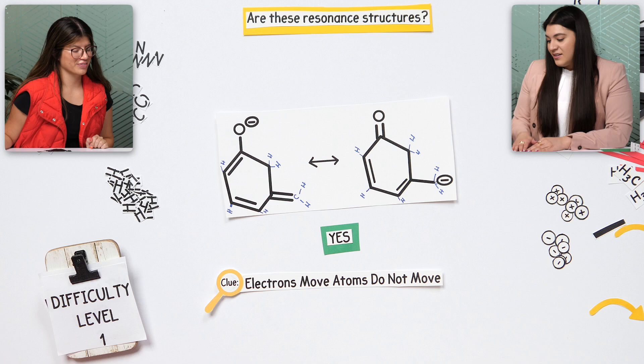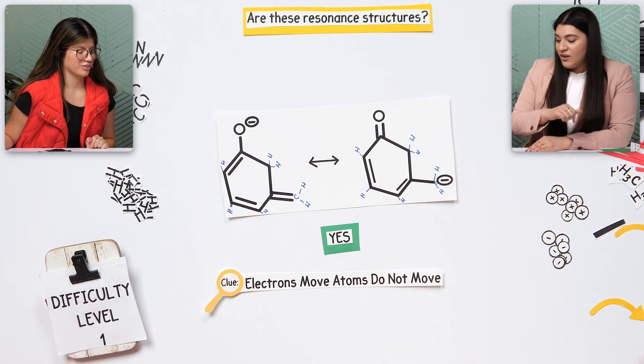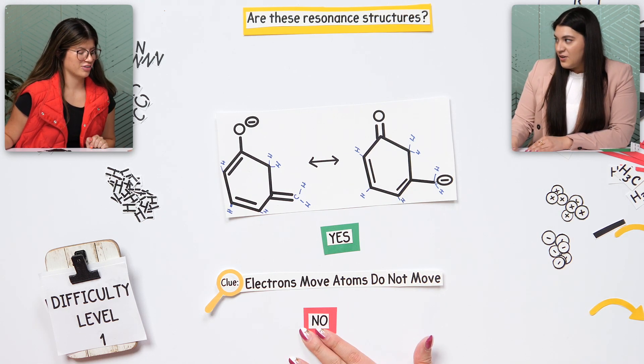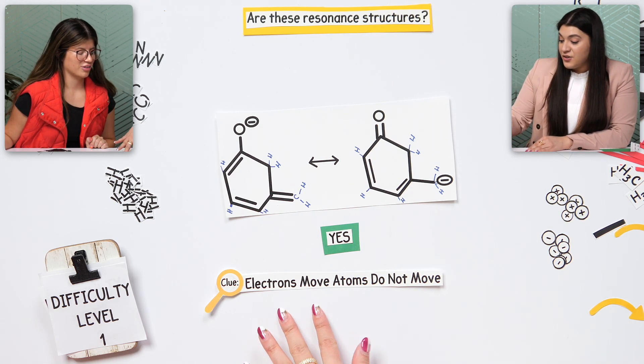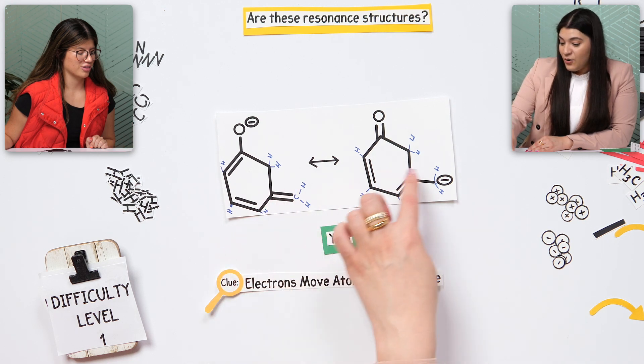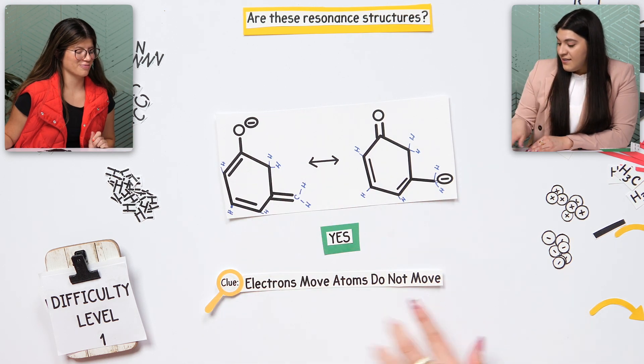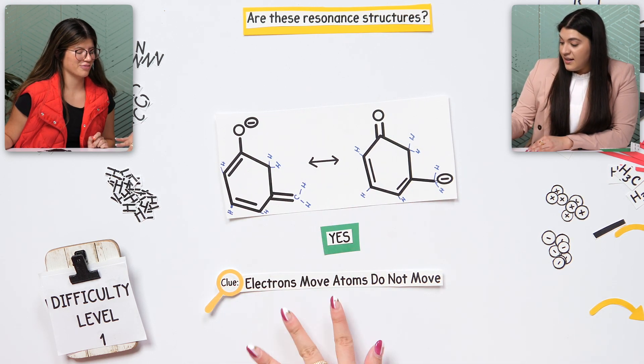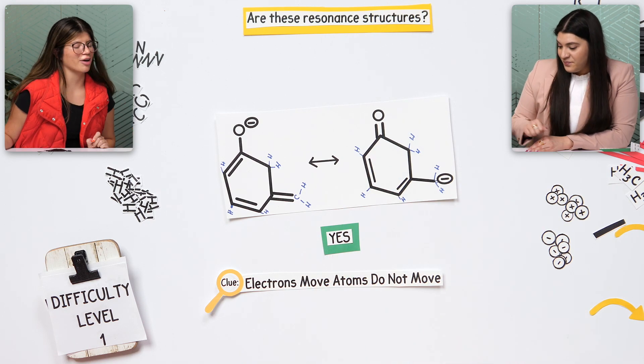The key rule: if atoms moved, it is NOT a resonance structure. If only the electrons moved — the bonds or any charges — then yes, that is a resonance structure. If you liked this practice problem and want to try another one, click right here. If you want to watch the entire study session, click right here.